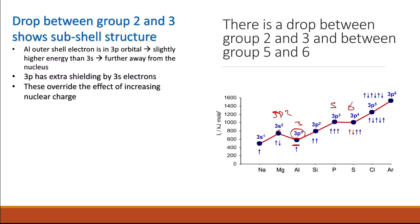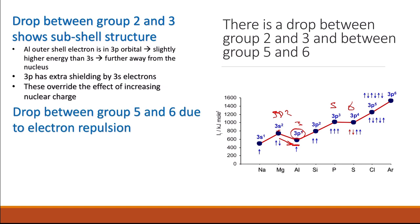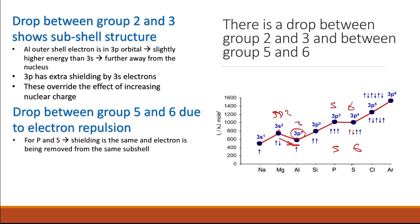So there is a slight decrease between Group 2 and Group 3, rather than the general trend of increasing ionization energy. There is also a drop between phosphorus and sulfur, which are Group 5 and Group 6. This is due to electron repulsion. For phosphorus and sulfur, the shielding is the same because the electrons are removed from the same subshell — both are in the 3p orbitals, and they have the same shielding from the 3s subshell.